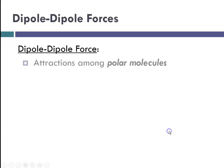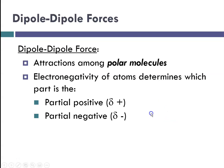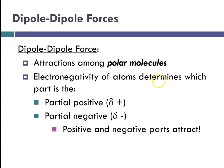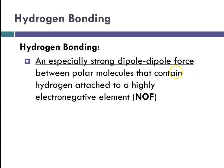The second kind of intermolecular force is the dipole-dipole force. We touched on this when we looked at the water molecule, with the hydrogen end being positive and the oxygen end being negative. These are attractions among polar molecules, and the electronegativity of atoms determines which part is the partial positive and which is the partial negative, as in water. Water molecules are attracted to one another because of this dipole-dipole force — the positive and negative parts attract one another in adjacent molecules. Hydrogen bonding is a special case of a dipole-dipole force.